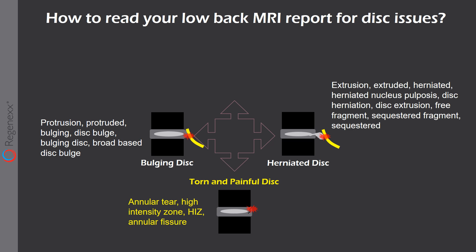And then there's a torn and painful disc — that's when a disc has a tear. Most of the time, that's just low back pain that gets worse with sitting and you really can't tolerate sitting. Other times, the little hole in the disc can leak chemicals and irritate the nerve as well. Things to look for: annular tear, high-intensity zone, HIZ, or annular fissure.